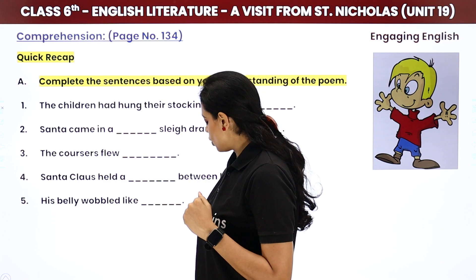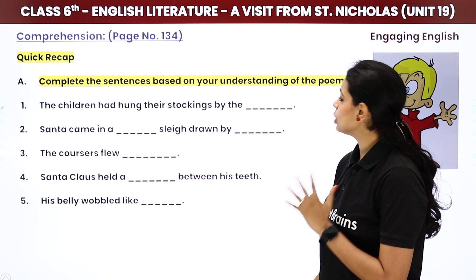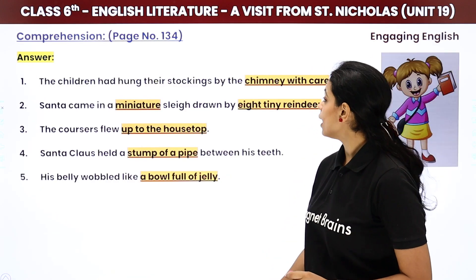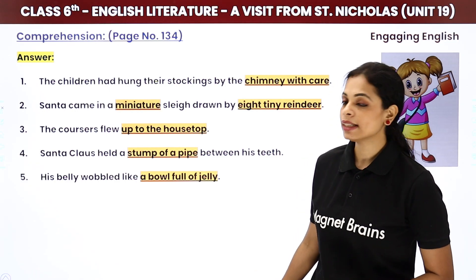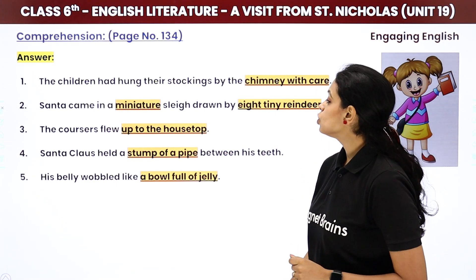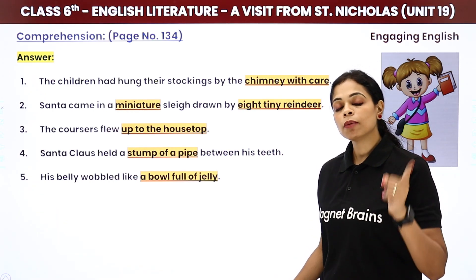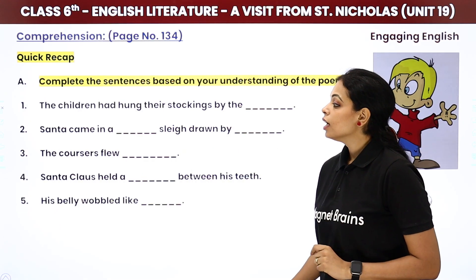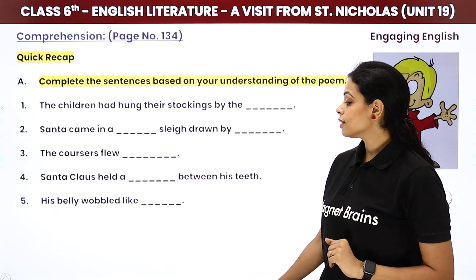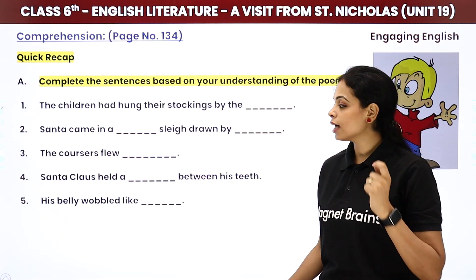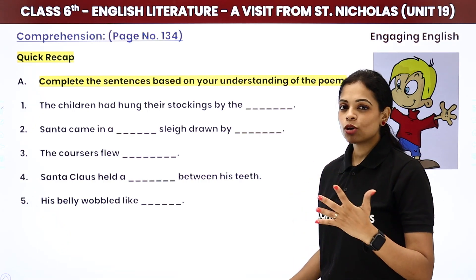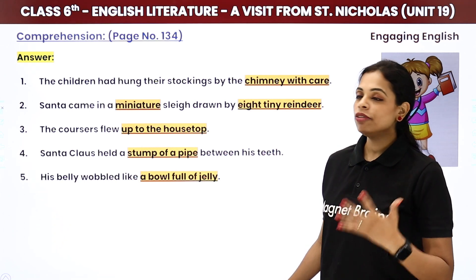First is a quick recap. You have to complete the sentences based on the poem. The children had hung their stockings by the... Next is Santa came in a miniature sleigh — miniature means very small — drawn by eight tiny reindeer. The coursers flew up to the housetop. Santa Claus held a stump of a pipe between his teeth. His belly wobbled like a bowl full of jelly. These are our answers.